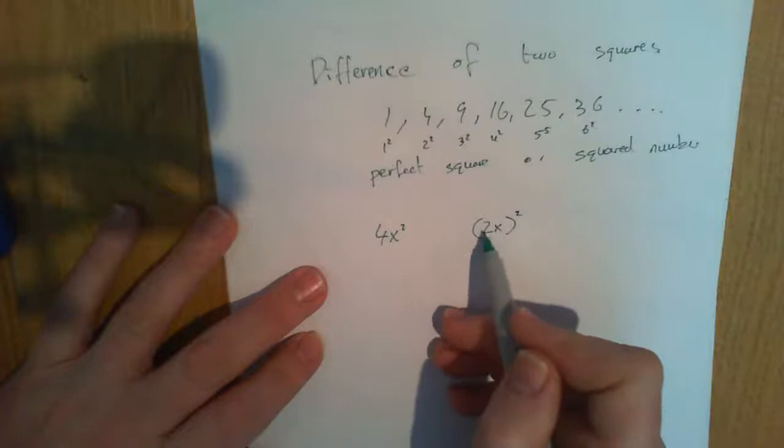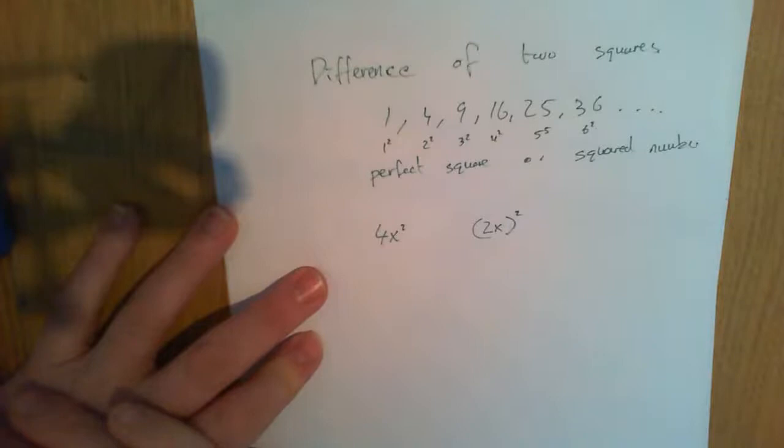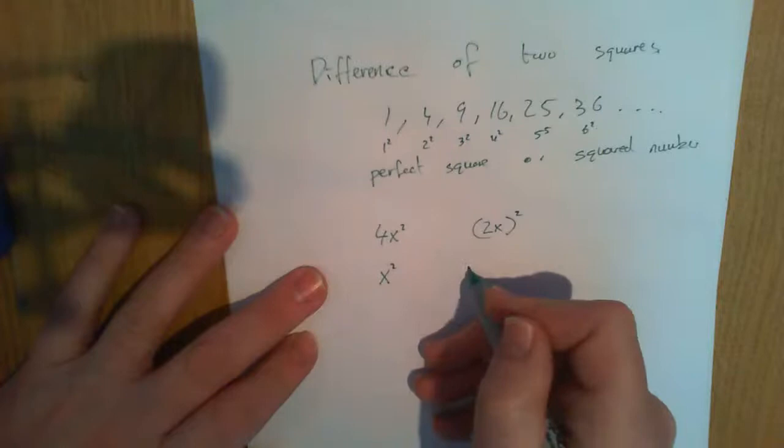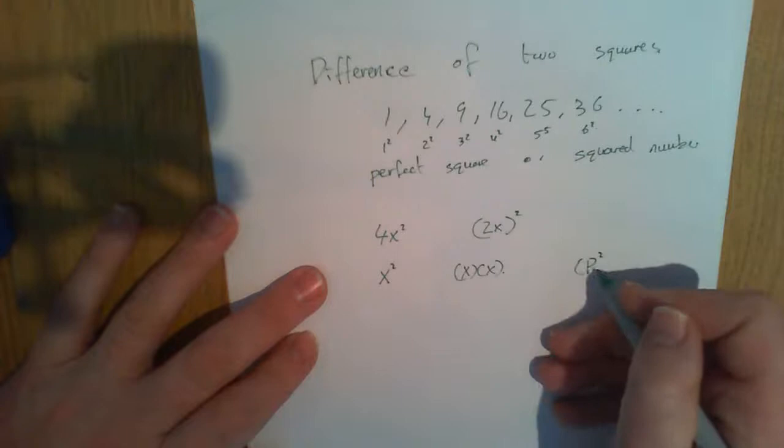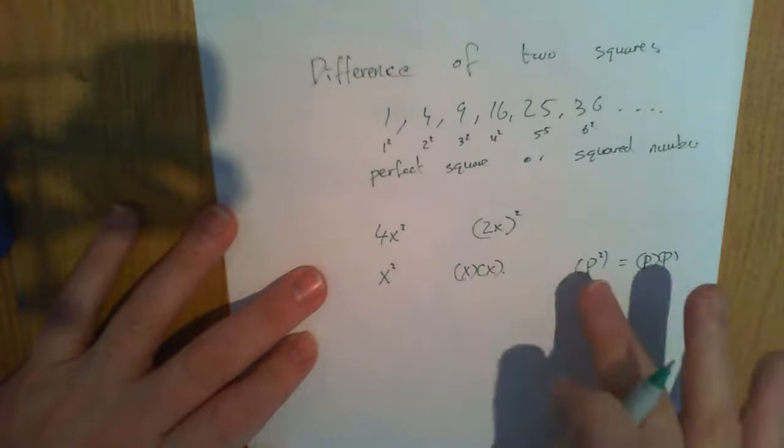So, 4x squared is 2x squared, because 2 squared is 4, and x squared is x squared. Similarly, x squared on its own is a squared number, because it's x multiplied by x. p squared is p multiplied by p. So they're all squared numbers.